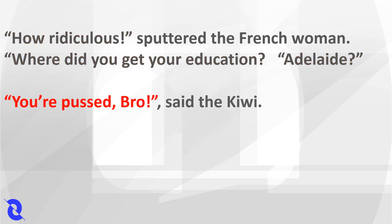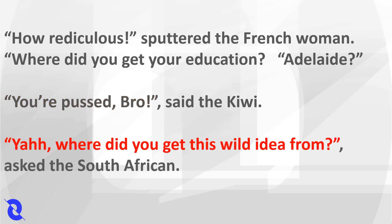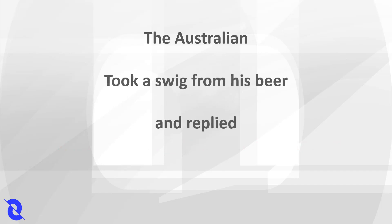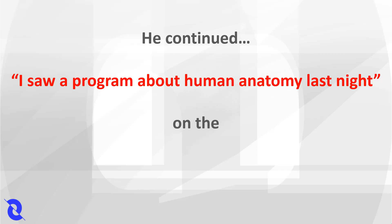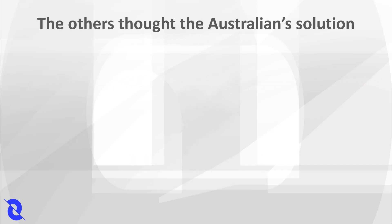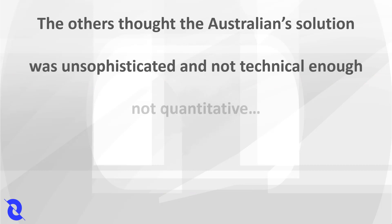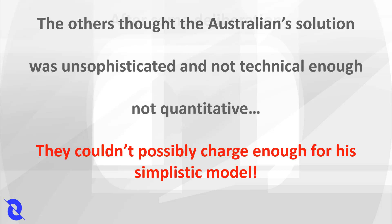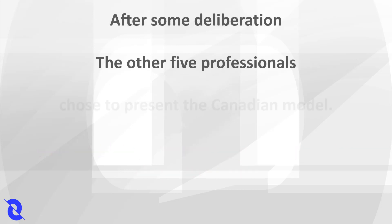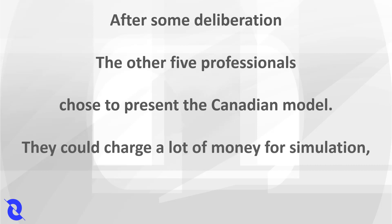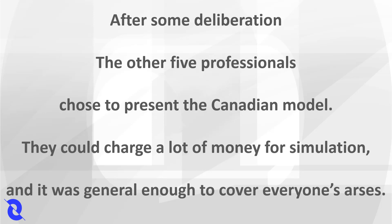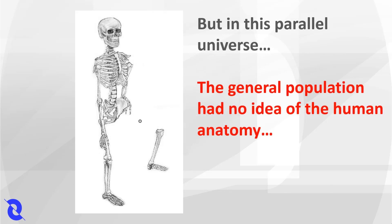"Where did you get this idea from?" asked the South African. The Australian took a sip from his beer and replied, "From the Discovery Channel. I saw a program about human anatomy last night on the Discovery Channel." The other five thought the Australian solution was unsophisticated, not technical enough, not quantitative, and weird. They couldn't possibly charge enough for this simplistic model. After some deliberation, the other five professionals decided they could charge more for the simulation, and it was general enough to cover everyone. But in this parallel universe, the general population had no idea what human anatomy would be like. In this group, only the Australian would know — because he watched the Discovery Channel. Everyone else was uninformed.